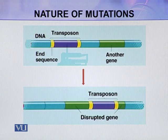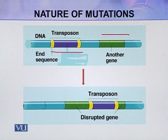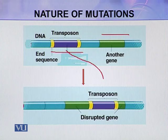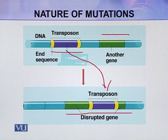For example, here you can see this is a transposon and this is a full gene. This transposon can be inserted in the middle of this gene — the green portion. By the insertion of this transposon, the whole gene will be disrupted and will become non-functional. So this is called a mutation.